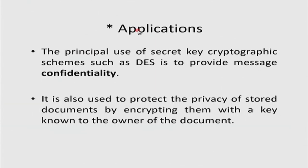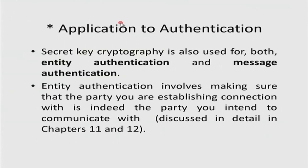Now that we have discussed how secret key ciphers are constructed using the P-box, S-box, and round key operations, what are their applications? The first is confidentiality: encrypt a message to ensure only the intended recipient can read it. This can also be done with public key cryptography, but secret key cryptography is much faster — about three orders of magnitude better. It is also used to protect the privacy of stored documents by encrypting them on disk.